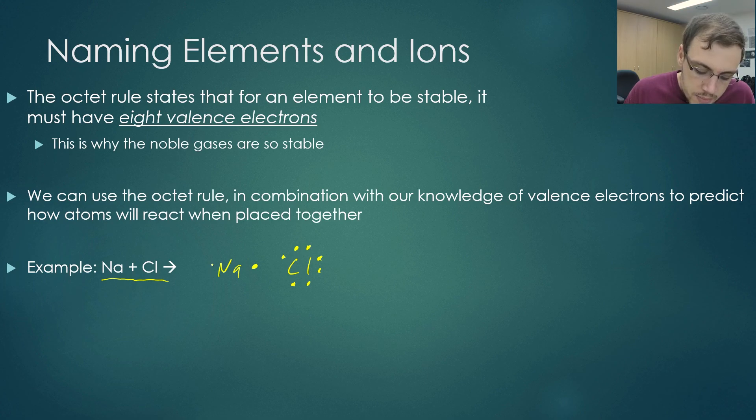Sodium, on the other hand, has overshot. He's filled his outer ring of electrons. He's gotten his eight and then he's gone down to the next energy level and got one electron. Poor sodium has gone a little bit too far and it's got too many electrons.